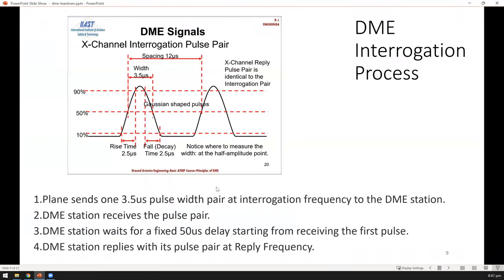This is how the interrogation process looks like. When the aircraft wants to talk to a DME station, it will send a pair of pulses. Each pulse has a width of 3.5 microseconds and a fixed spacing of 12 microseconds. The DME station is perpetually listening. Whenever it sees that two pulse pairs are directed at it, it will wait 50 microseconds delay and then reply back to the aircraft at the associated reply frequency. The aircraft will then know based on this delay how far away it is.